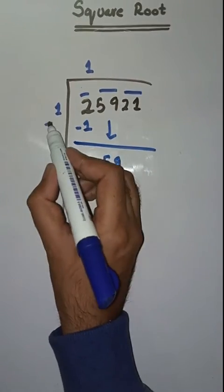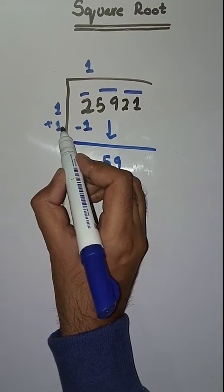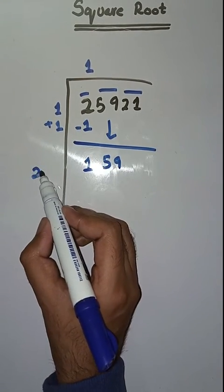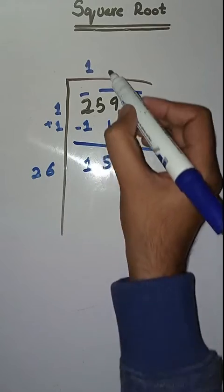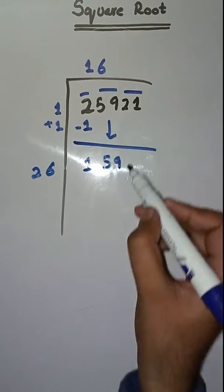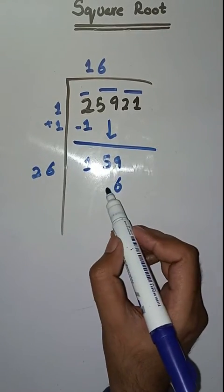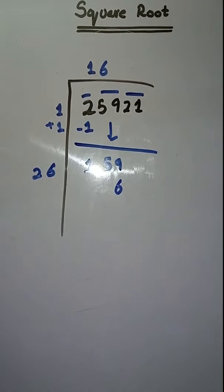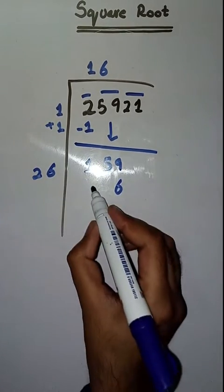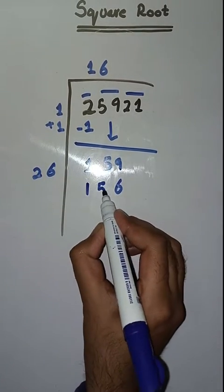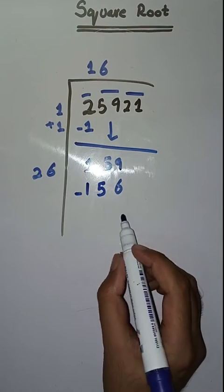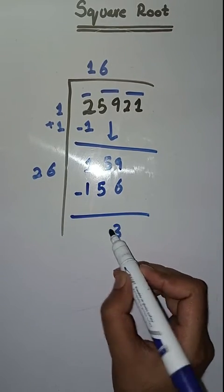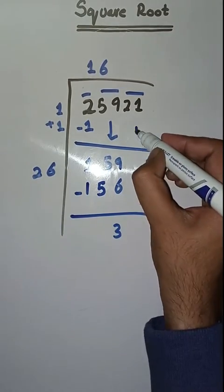Next we have 59. We take 1 plus 1 which is equal to 2, so we will take the number 6: 26 times 6 equals 156. Subtract: 159 minus 156 equals 3, then 5 minus 5 equals 0.